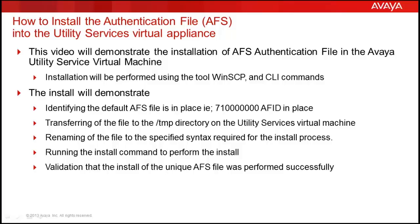The Utility Services Virtual Appliance is delivered with a common default authentication file with the AFID of 7.1 followed by 8 zeros. That file provides for Avaya Services access into the Utility Services application. But because that file is not unique, the same default file is used on all system platform installations, and for that reason it must be changed out, as it is an open security hole if the key is broken for that particular file. So with all systems existing with an AFID of 71 with 8 zeros, please be sure it is changed out to a unique file from rfa.avaya.com in the AFS subsystem.